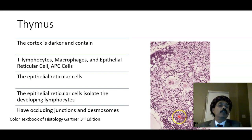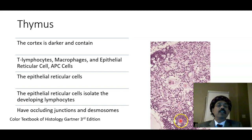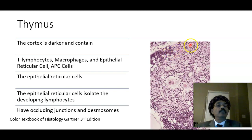These cells travel from the cortex to the medulla and ultimately reach the blood vessels, distributing throughout the body where they undergo cloning. Different types of T lymphocytes are produced: cytotoxic T lymphocytes, killer T lymphocytes, and regulatory T lymphocytes. Immature cells come from the bone marrow and are processed to become immunologically competent in the thymus.